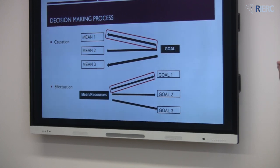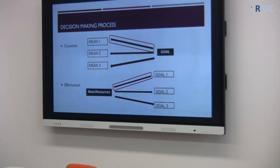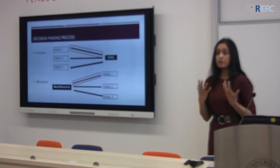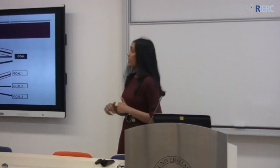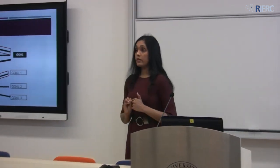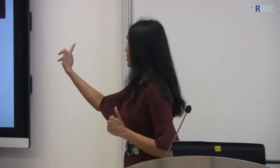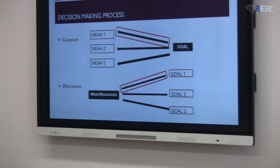Causation means you start with the goal, and then you try to see how you could achieve this goal. Perhaps you can use mean one, two, or three, and then you decide to go ahead with mean one because it generates the highest returns on investment. Effectuation means we start with the resources in hand, and then we try to see what we can do with those resources. Perhaps we could achieve goal one, two, or three, but we use the resources to achieve goal one because it minimizes the risk.